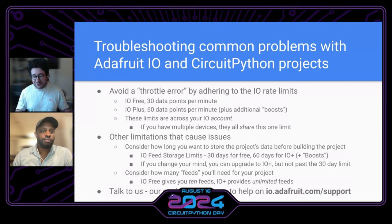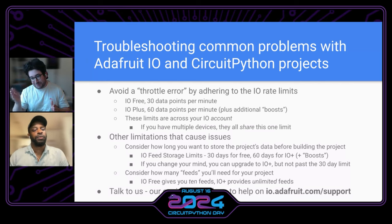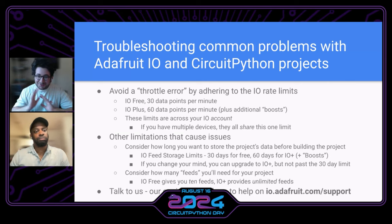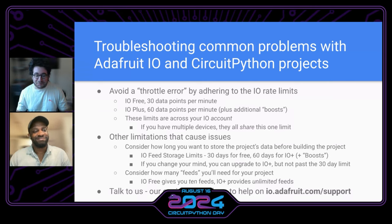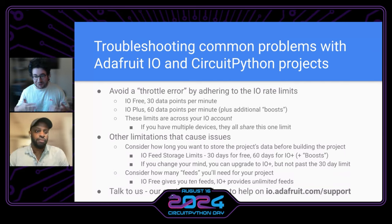Also consider how many feeds you need. IO free gives 10 data feeds, IO Plus is unlimited. You can build your project and scale up — usually people get the free account and then buy the pro account. And if you're totally stuck — you don't know what the data limits are, you're having problems — we have support engineers who are here to help at io.adafruit.com/support. It'll only be me or someone else from the IO team. When you have issues with CircuitPython and Adafruit IO, you're usually going to get somebody who works on the project directly.